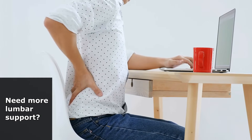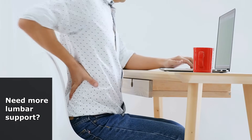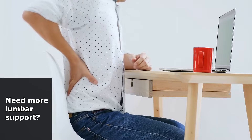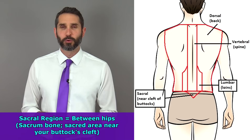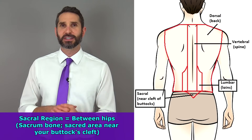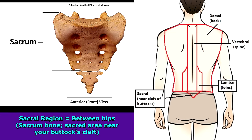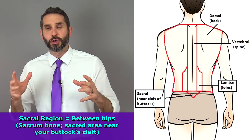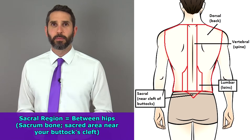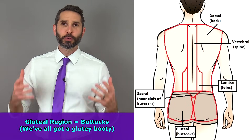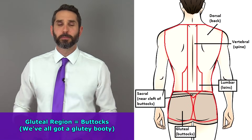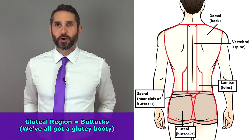The sacral region is the area of the lower back where your sacrum bone is located — it's called the sacrum because some cultures believe the human soul resides within that bone. Finally, the gluteal region is the area of your buttocks, and those muscles are called your glutes. So we all have a gluteal booty. Those are some of the areas within the axial region.